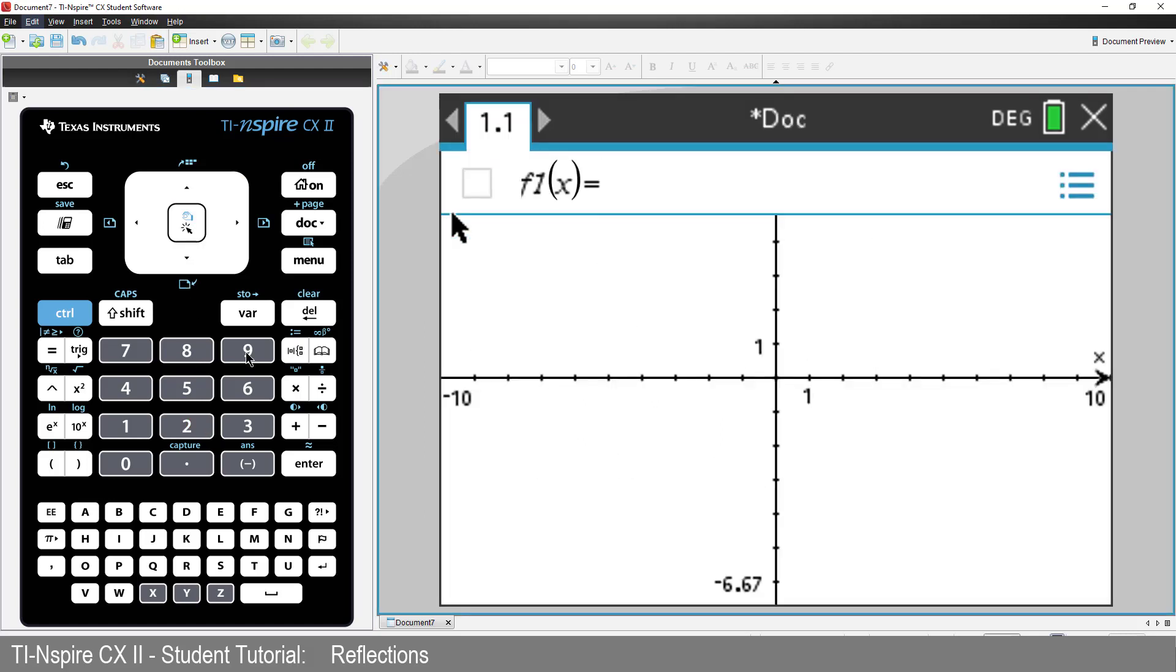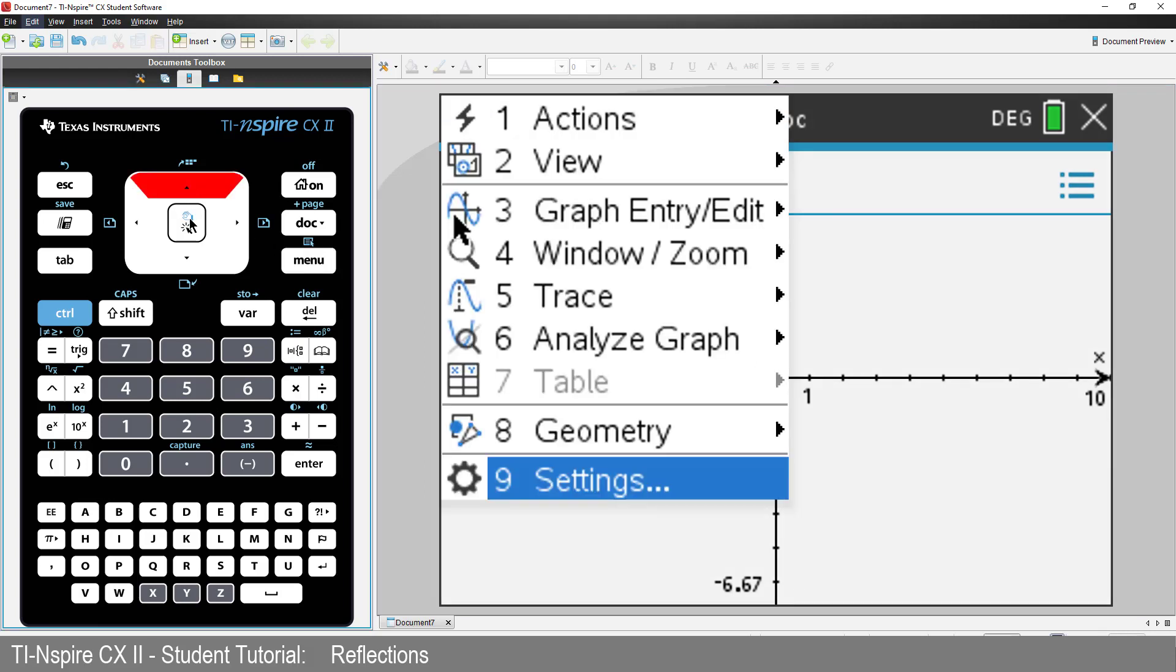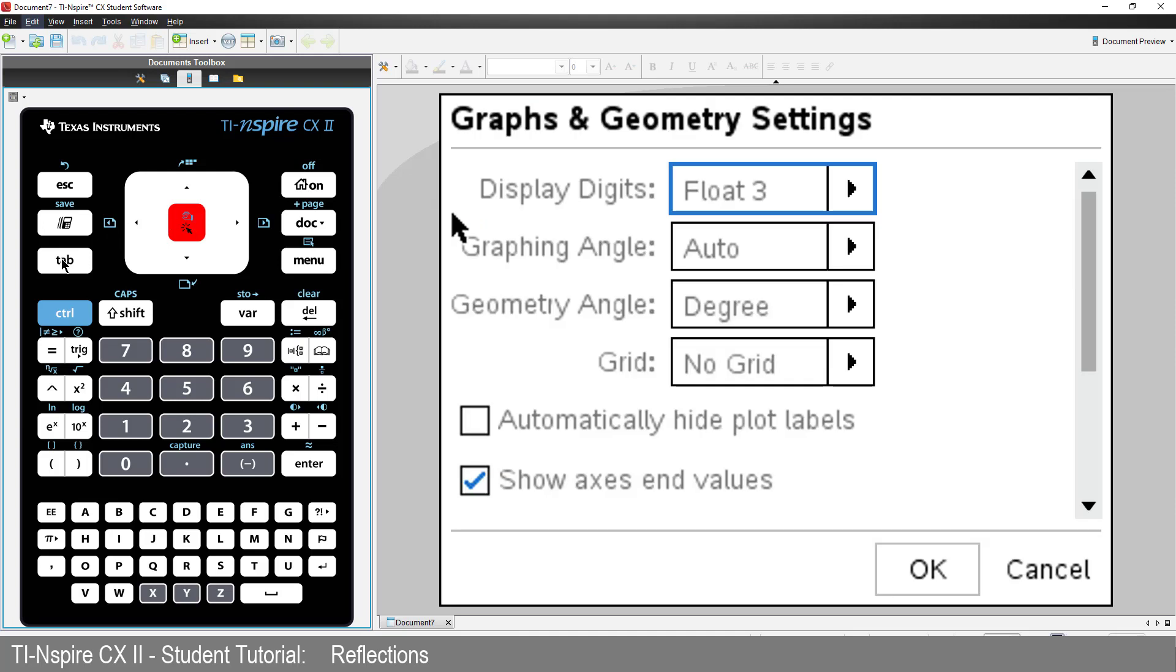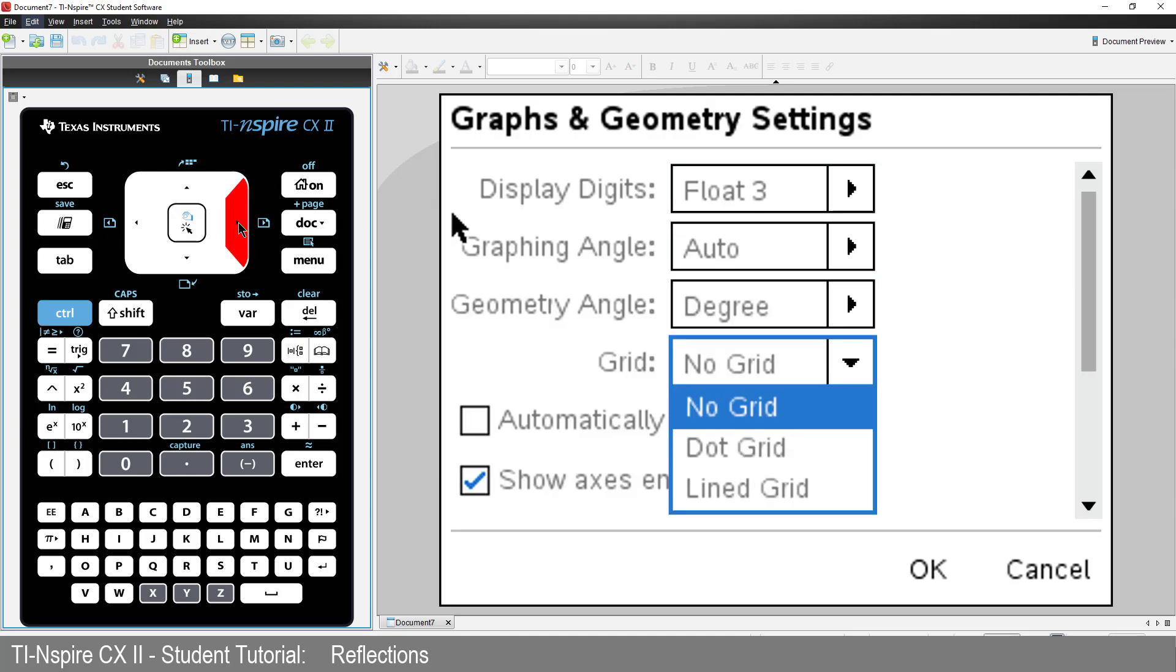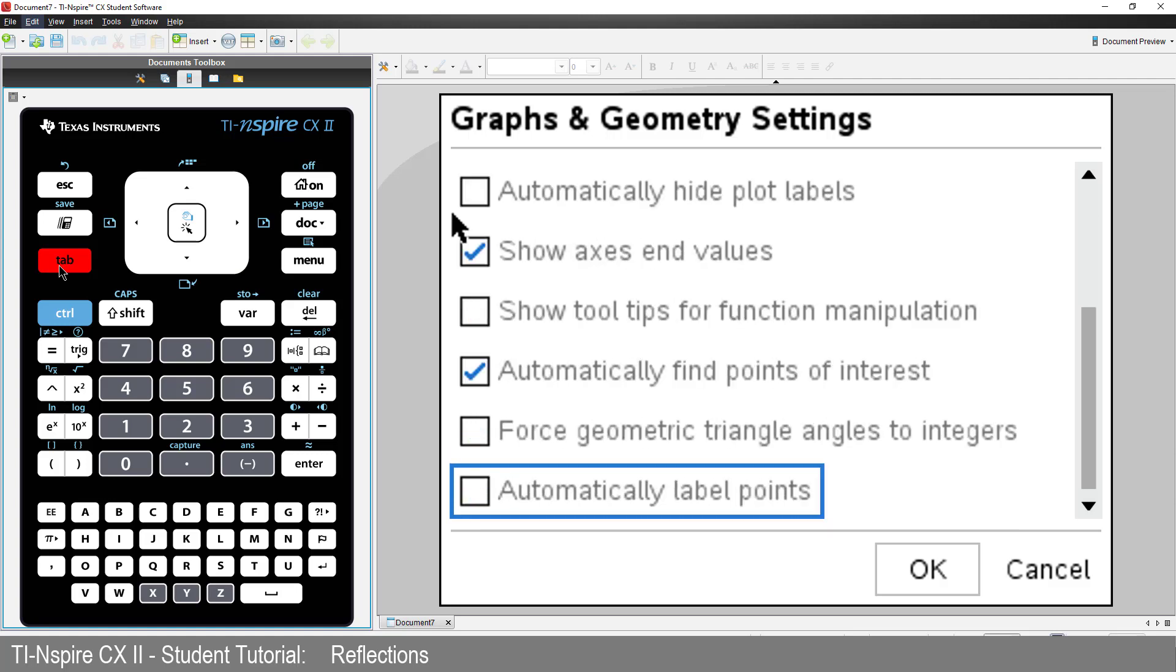Start a new document and insert a Graphs application. There are a few changes we need to make to the Graph settings. Press Menu and select Settings. Tab down to Grid, press the right arrow and then arrow down and select Dot Grid. Now tab down and select Automatically Label Points, then press Enter.